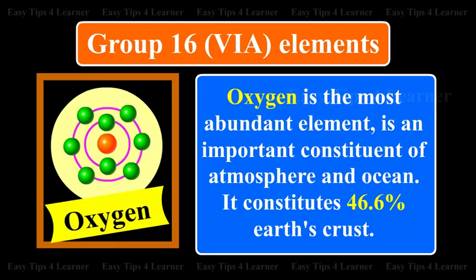Oxygen, the most abundant element, is an important constituent of the atmosphere and ocean. It constitutes 46.6% of Earth's crust.